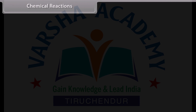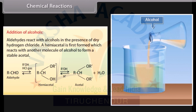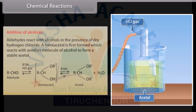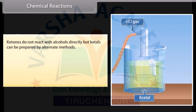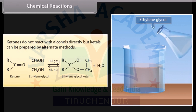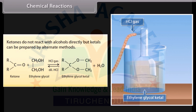Addition of alcohols: aldehydes react with alcohols in the presence of dry hydrogen chloride. A hemiacetal is first formed, which reacts with another molecule of alcohol to form a stable acetal. Ketones do not react with alcohols directly, but ketals can be prepared by alternate methods. Ketone reacts with ethylene glycol in the presence of dry hydrogen chloride gas to form ethylene glycol ketal along with water.